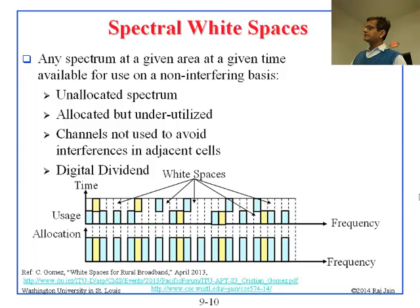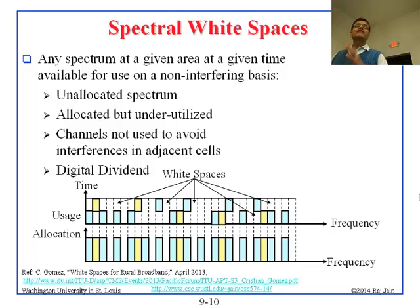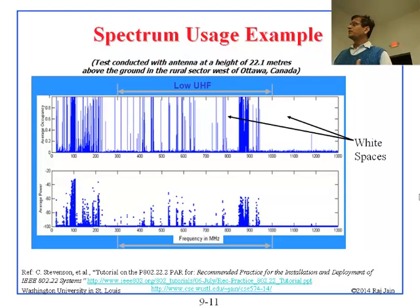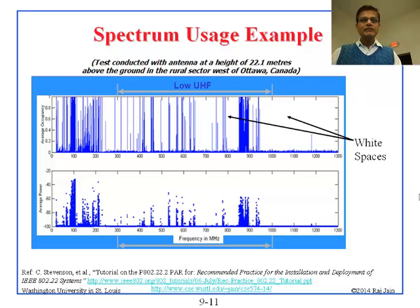The simple idea is that looking at the allocation, lots of spectrum has been allocated but not all of it is being used at any given time. Whenever it is not being used or not allocated, that is all white space — it is called 'white' because when you plot spectrum usage on a graph, you see a lot of white space. People plotted their spectrum usage and only a little bit was occupied; everything else was white. A real measurement conducted in Ottawa, Canada, shows that most of the spectrum is white.